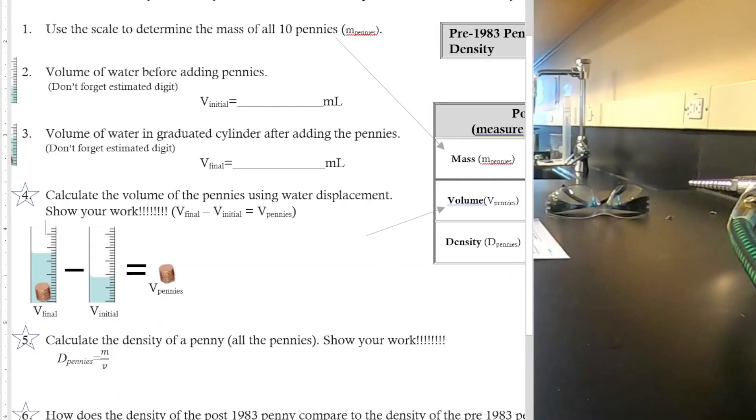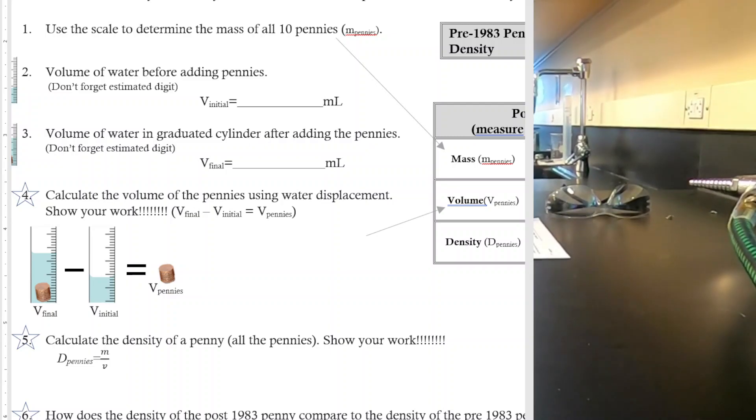With all of that, you're going to calculate your density. For the density of the pennies, you need to use the mass of the pennies and the volume of the pennies—not the volume of the water. The density of the pennies for each lab group who did this should be pretty similar. So let's go ahead and play the video again.